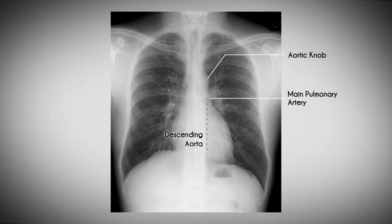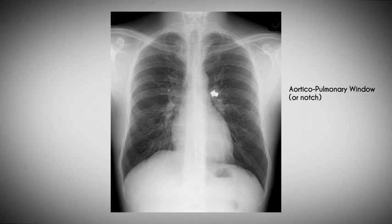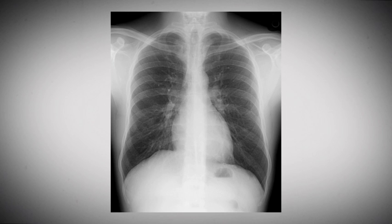In the mediastinum, notice the small bulge in the contour made by the main pulmonary artery or pulmonary outflow tract. There is an indentation between the aortic knob and the pulmonary outflow tract called the aorticopulmonary window or aorticopulmonary notch. The normal concavity of this aorticopulmonary window is part of the classic mediastinal silhouette and, when obliterated, needs to be explained. Lymphadenopathy, lung cancer, and vascular masses are common in this location.